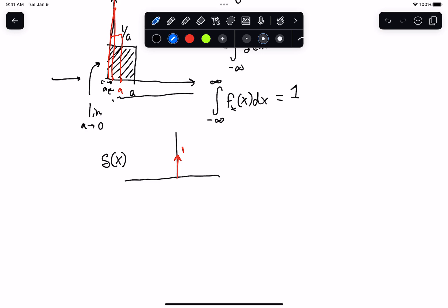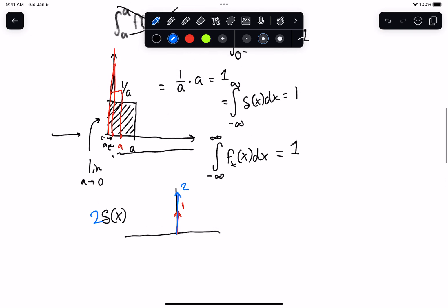Now, one thing you can do is you could scale this. So basically if I put 2 delta of x, basically do is scale this up by 2. The reason you could do this is this is basically due to the linearity of the integral. It's like replacing the height of this with rather than 1 over a, you replace it with 2 over a, and now your area not being 1 was now going to be 2.